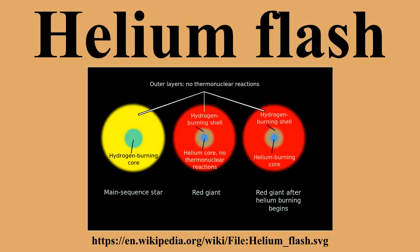This runaway reaction quickly climbs to about 100 billion times the star's normal energy production until the temperature increases to the point that thermal pressure again becomes dominant, eliminating the degeneracy. The core can then expand and cool down and stable burning of helium will continue. A star with mass greater than about 2.25 solar masses starts to burn helium without its core becoming degenerate and so does not exhibit this type of helium flash. In a very low mass star, the core is never hot enough to ignite helium, and the degenerate helium core will keep on contracting and finally becomes a helium white dwarf.